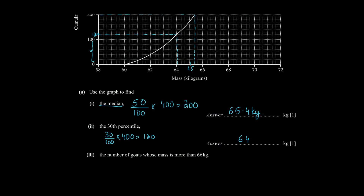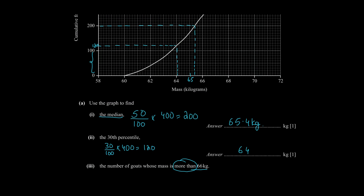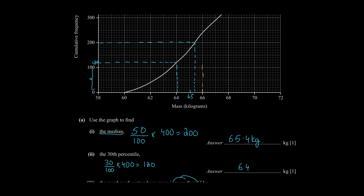Part 3 is asking us the number of goats whose mass is more than 66 kilograms. Now remember, whenever the question says 'more than' or uses the term 'at least', we are going to read backwards. We are going to see where 66 is on the graph. First we are going to take the corresponding value of 66.